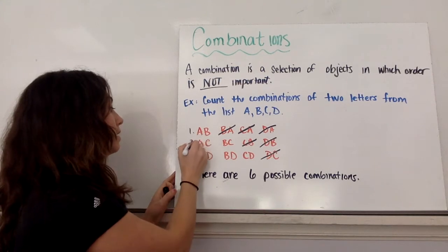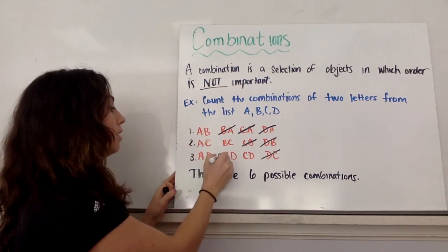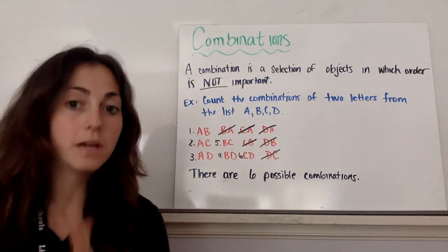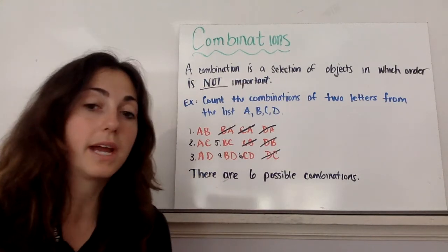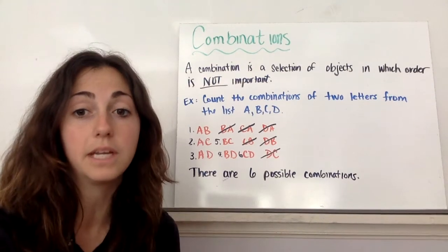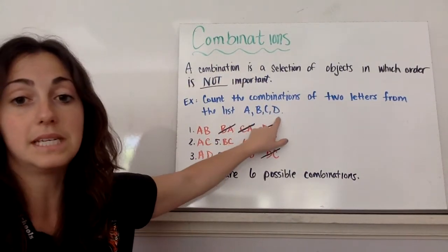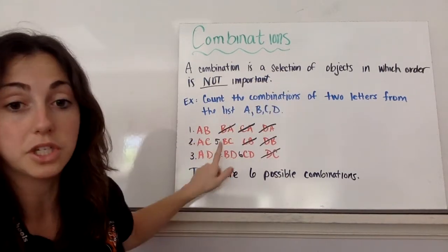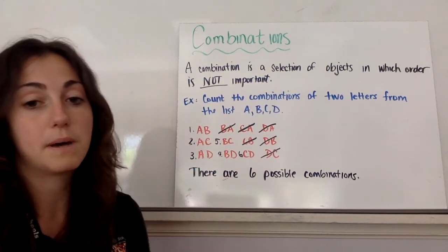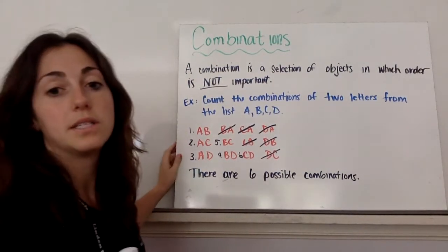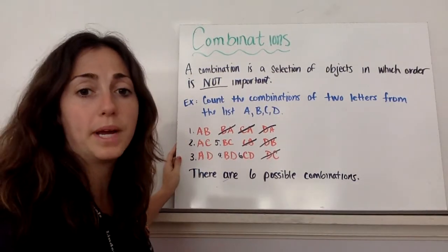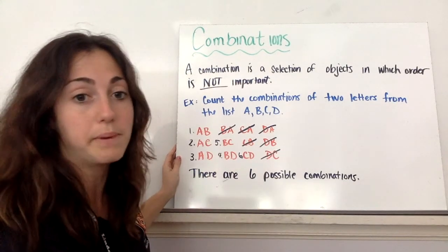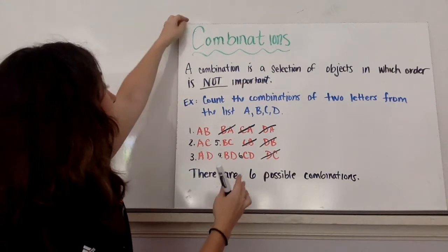Here's my one, two, three, four, five, six combinations. Okay? So that would be the answer. If I asked you this question, count the combinations of two letters from the list of A, B, C, D, using combinations, you would have six possible combinations. Okay? So this is one way to do it where you have a small amount and you can write it out and cancel the repeats. But there's actually a formula that you can use.